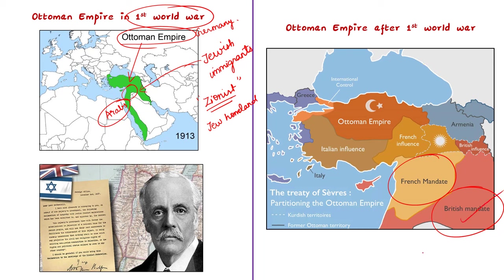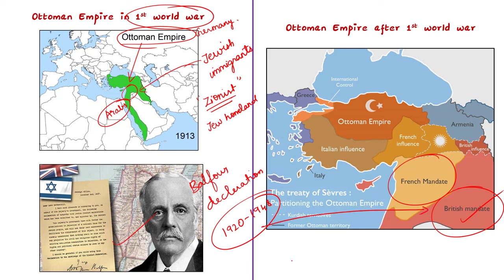The British government issued a declaration called the Balfour Declaration, which expressed support for the establishment of a Jewish state in Palestine. The British occupied this Palestine region from 1920 to 1948. During this time, tensions between Jewish and Arab communities in Palestine escalated.